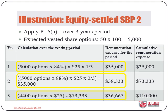In year three, it is confirmed the company will reward 44 employees with 100 options each, therefore 4,400 units of options at fair value of $25 each, minus what was already recognised in years one and two, leaving a sum of $36,667 worth of expense and a total of $110,000 worth of equity.